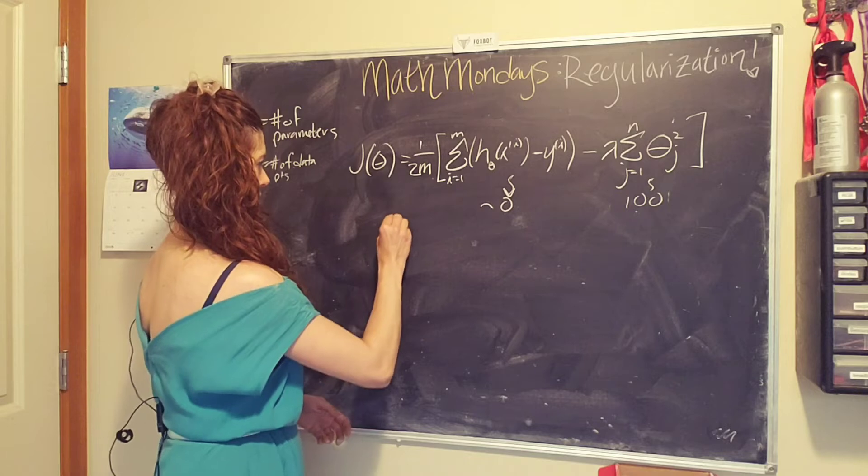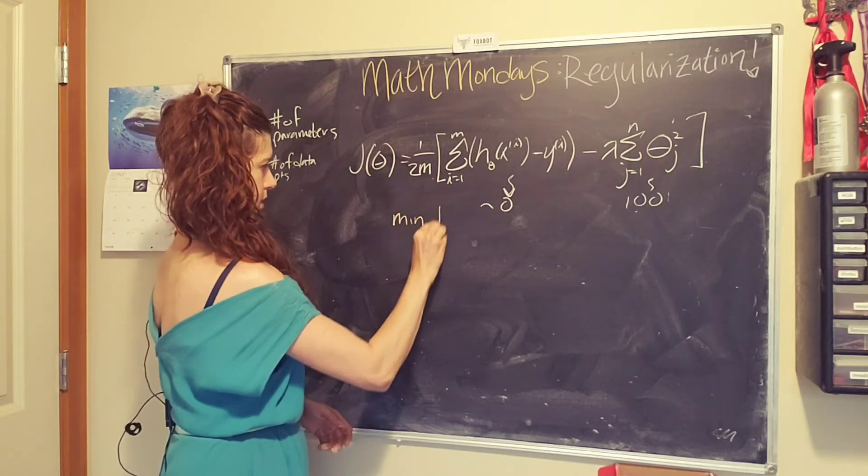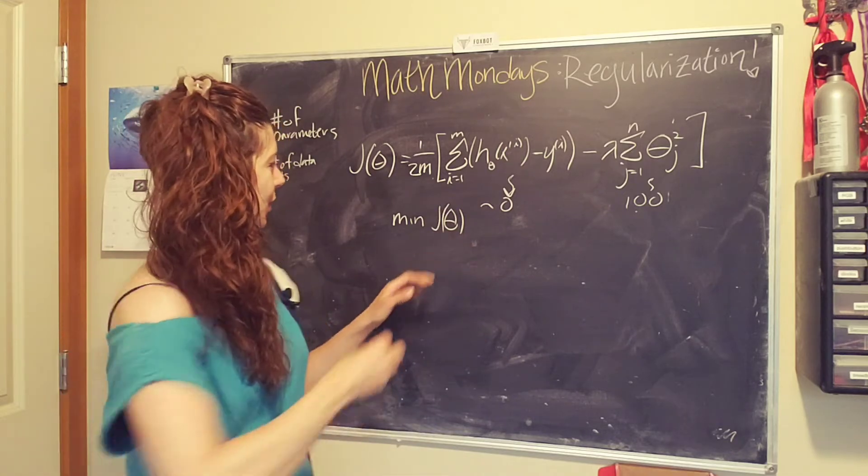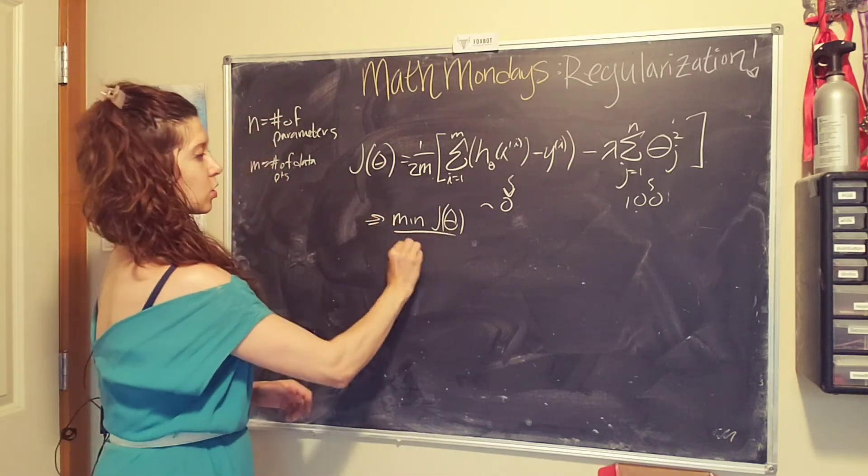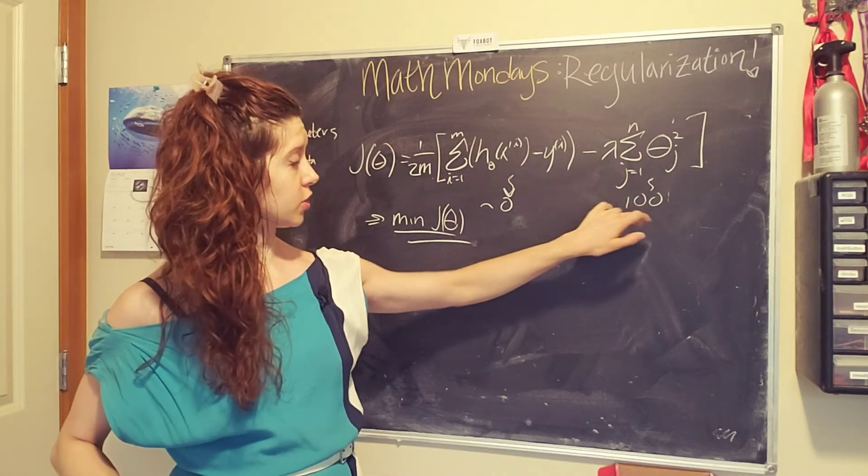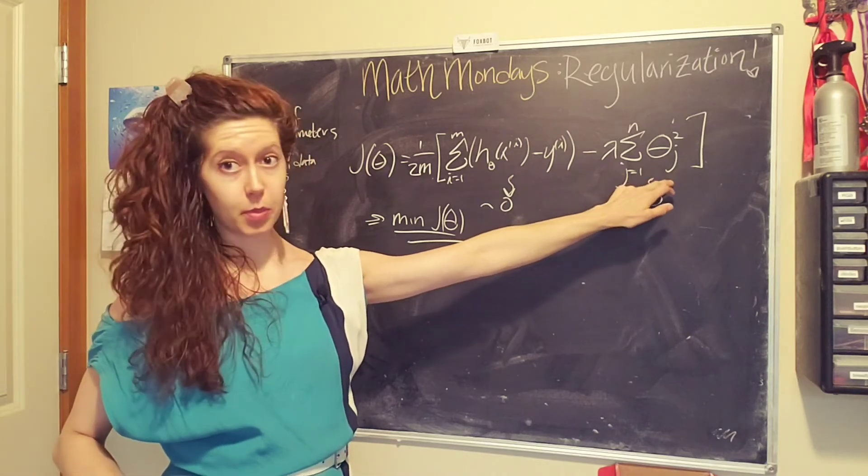The goal is to minimize our cost function, right? So in our algorithm the goal is min j of theta. And so if this is our goal and we have a cost function that equals a hundred, we are going to keep iterating on this one until we get to a smaller value.